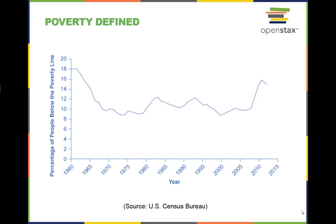The definition of poverty in the U.S. was originally created in 1963 by a government worker called Molly Orshansky. She established a line or level of funds needed in order to provide a nutritionally adequate diet to a family who spends one-third of its total income on this diet, the other two-thirds going to other needs like housing.